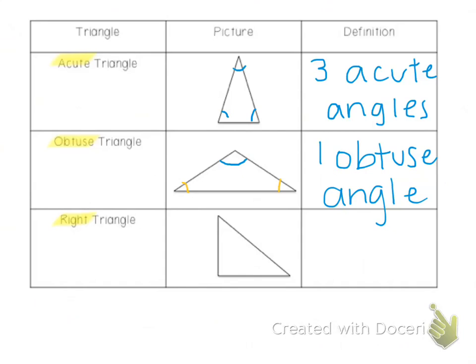Our last type is a right triangle, and a right triangle has one right angle. The other two angles are going to be acute.